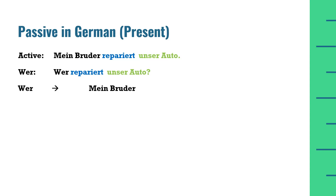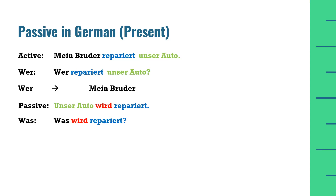Ab dekhte hain ki passive voice mein is ko hum kaise convert kar sakte hain. Passive ke andar isi sentence ko yun likhenge: 'Unser Auto wird repariert' — hamari gaadi repair ho rahi hai. Passive voice mein hamara focus hota hai 'was' ke upar — kya ho raha hai. 'Was wird repariert?' ka jawab hoga 'unser Auto'. Ab hum dekhte hain ke agar ek active sentence hai to usko passive mein convert karne ke liye kaun sa sentence structure follow karna hota hai.